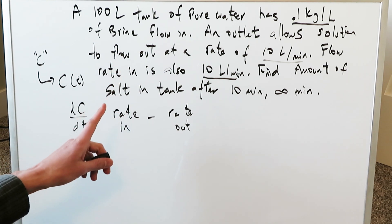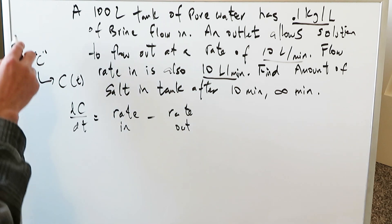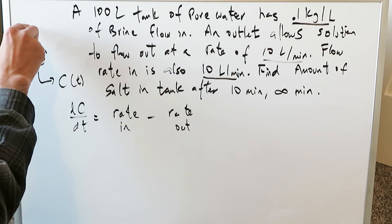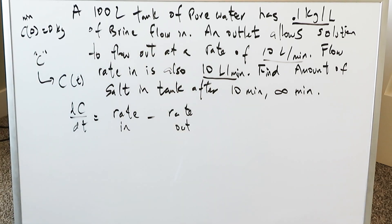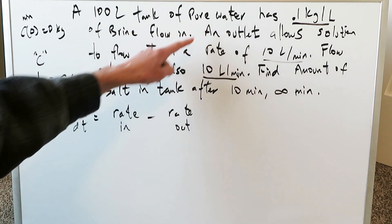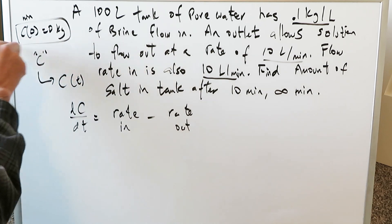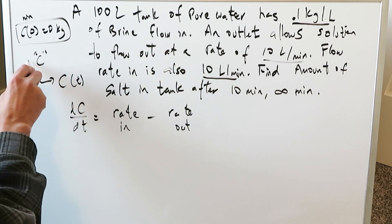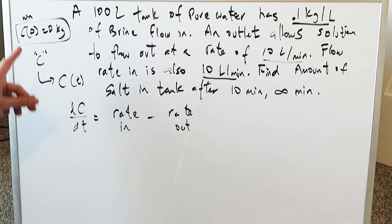From the very beginning of the problem process you should always identify your initial conditions. Initially at time zero minutes we have zero kilograms of salt — because at time zero you are looking only at pure water. This is something you need to determine because it helps you make the transition from the differential equation to your function. Now we need to develop our differential equation.